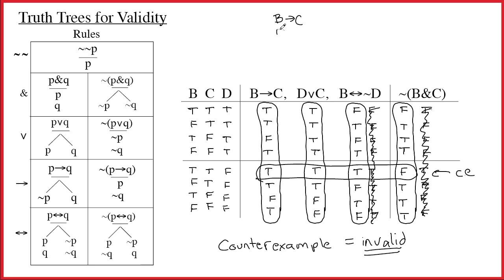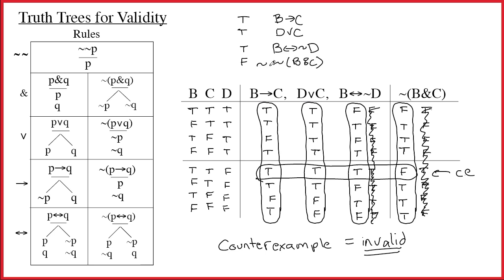We're going to do a tree for this very same argument. The first step is to set up the counterexample — take all of the premises and stack them one above the other: B arrow C, D wedge C, and B double arrow tilde D. Then take the conclusion and put it in this stack. We want this to correspond to the counterexample — all premises true and the conclusion false. Just listing the premises makes them true, so to make the conclusion false we simply negate it by adding a tilde. This trunk of the tree represents all premises true and conclusion false.